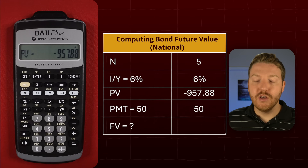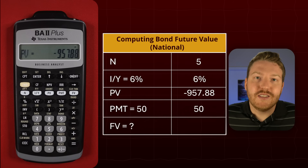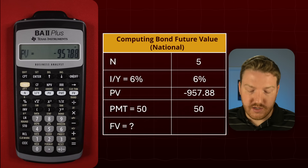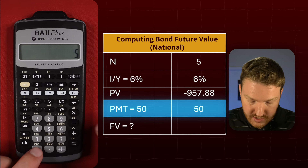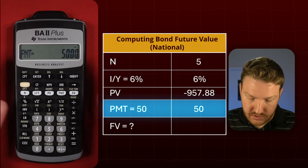And then finally we need to put in the payment. So let's say that this bond receives a coupon of $50 per year. So let's do 50 for payment.